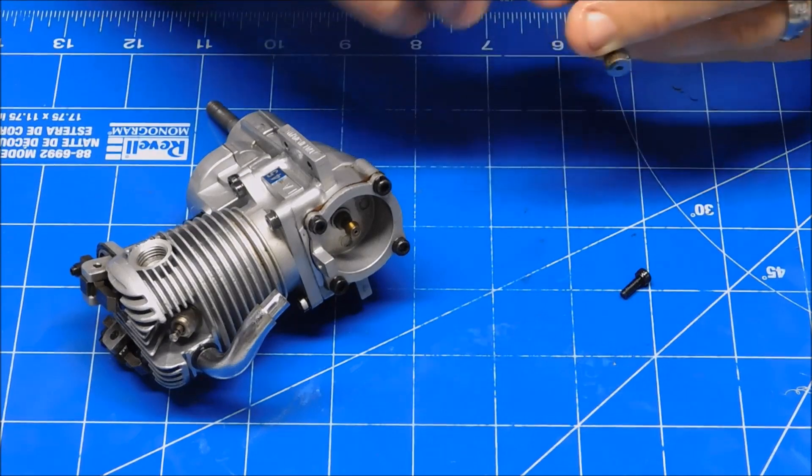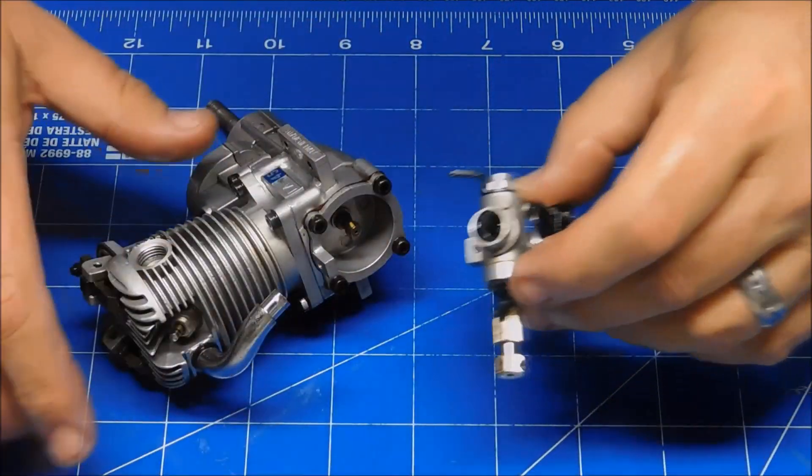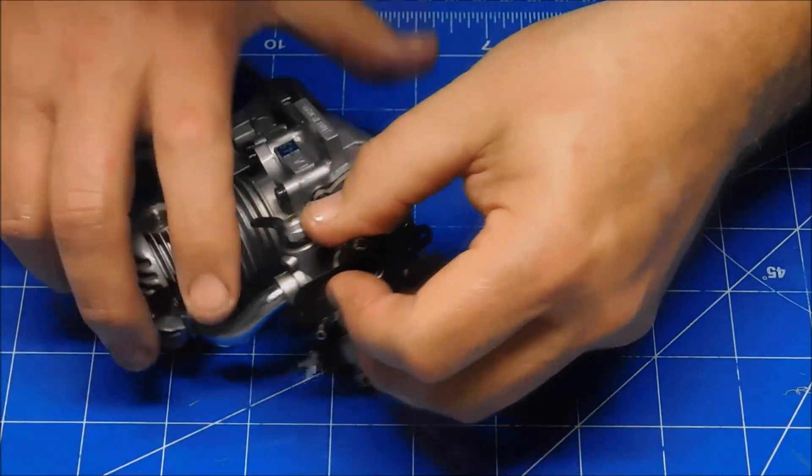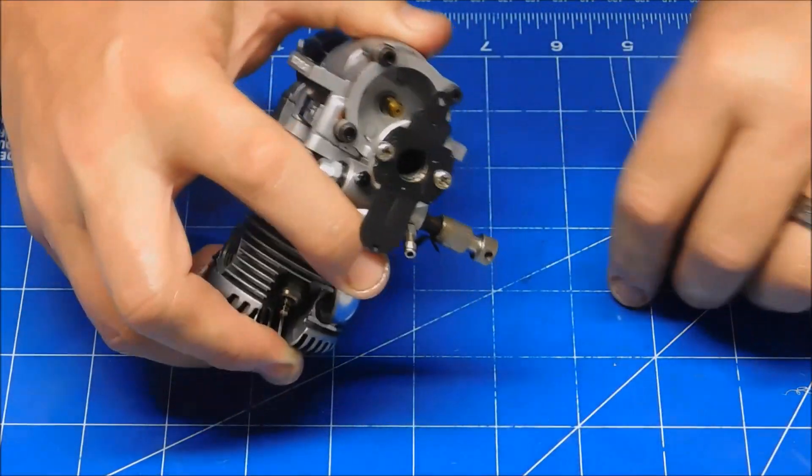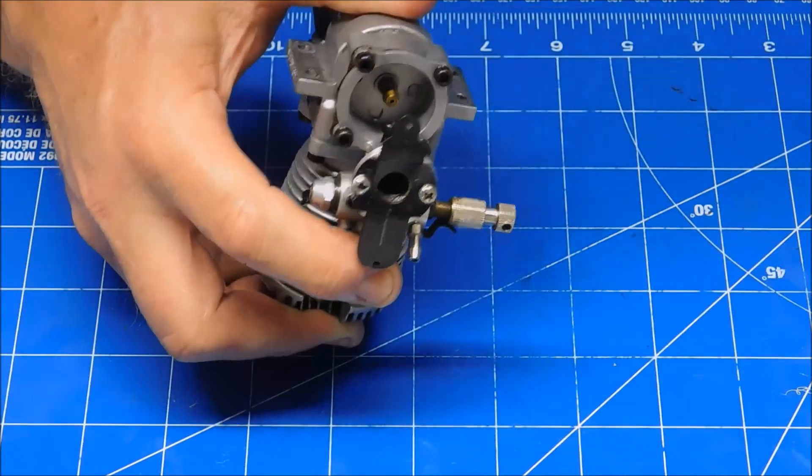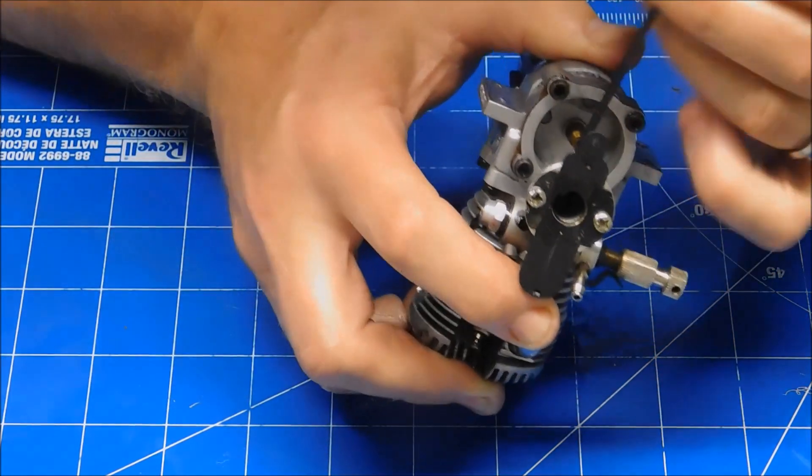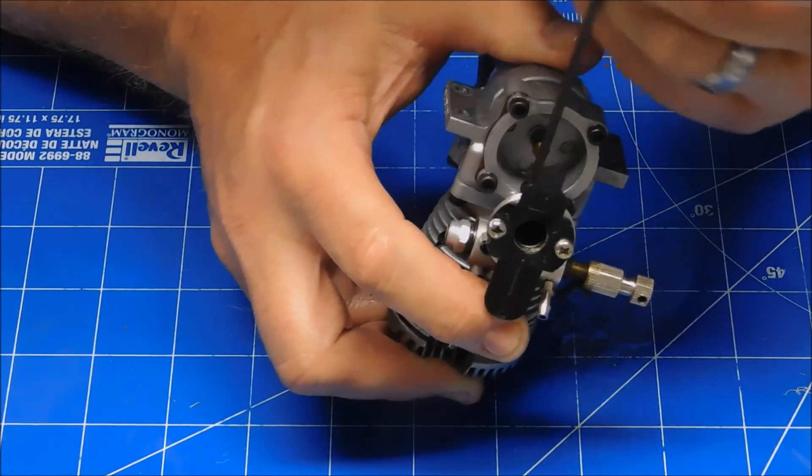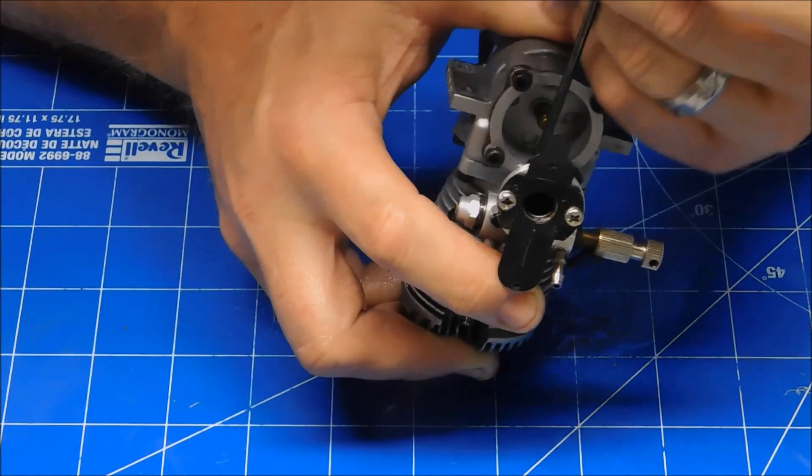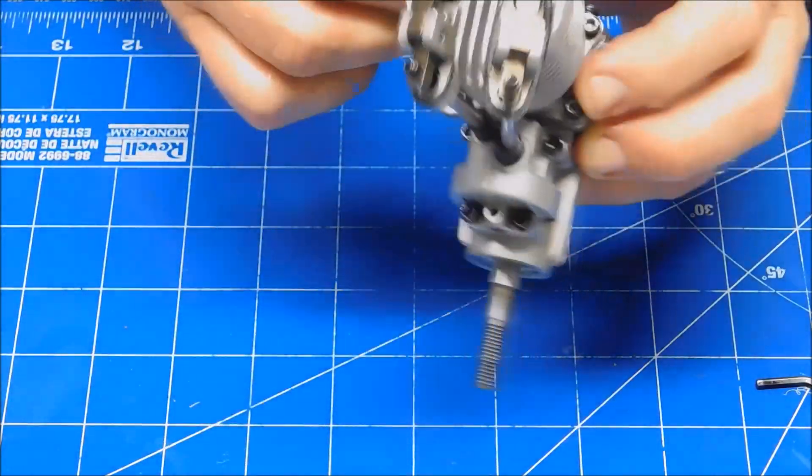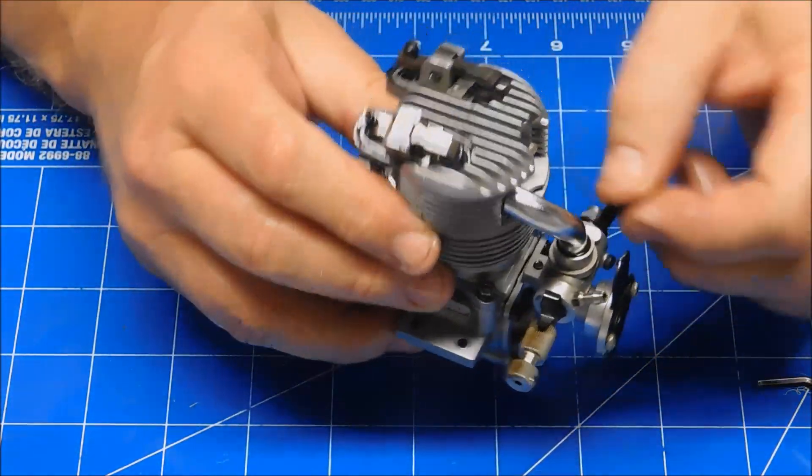Oh that's interesting. This carb, the o-ring just kind of barely fits in a little indentation there instead of recessing into the carb, like other Saito engines. That's probably something they upgraded. I found it was not an ideal design. Okay, carb's installed.